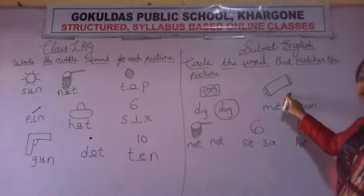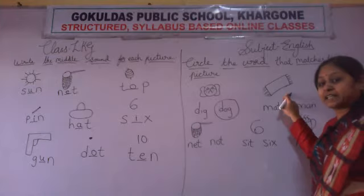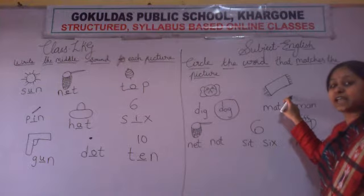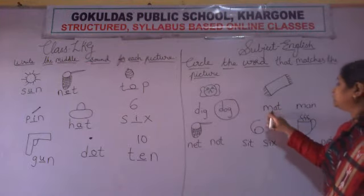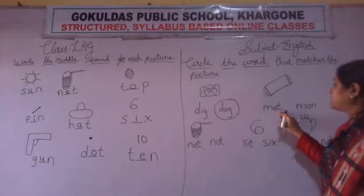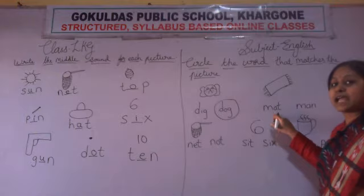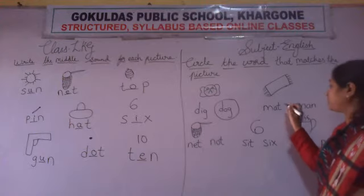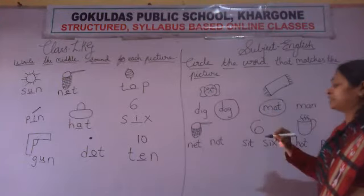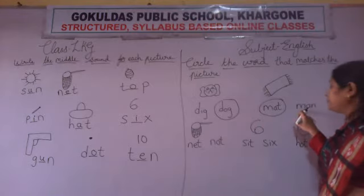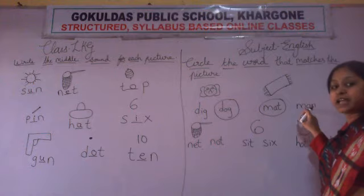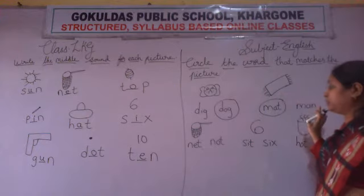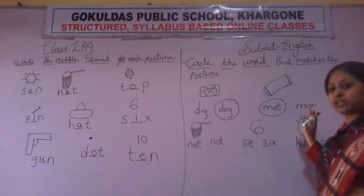Next, look here. Which picture is this? This is the picture of mat. M-A-T — mat. Read this word: M-A-T — mat. This is matching with the picture. This word is matching with the picture. So what we will do? We will circle it. Now read this: M-A-T — mat. This is mat — matching with this picture? No. So we will not circle it.